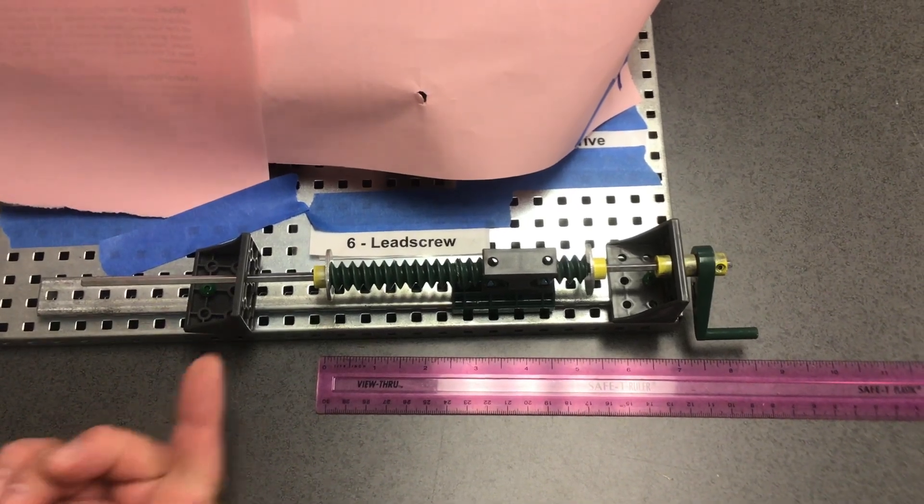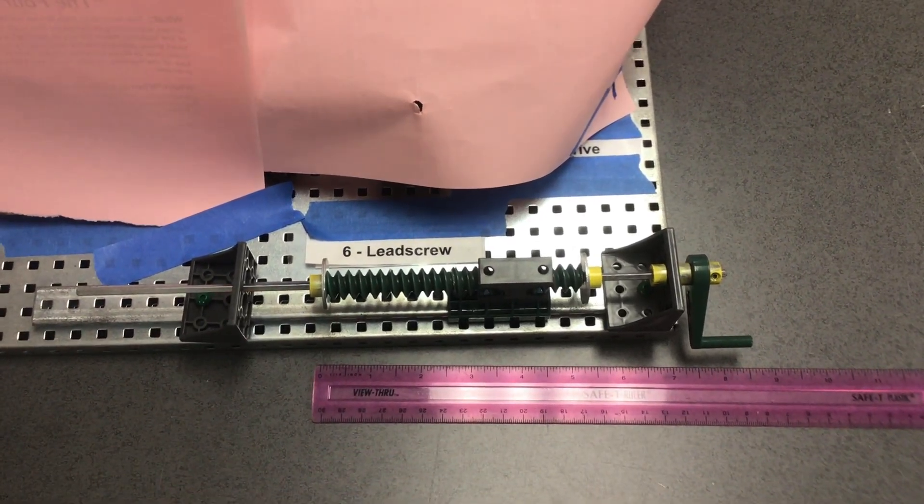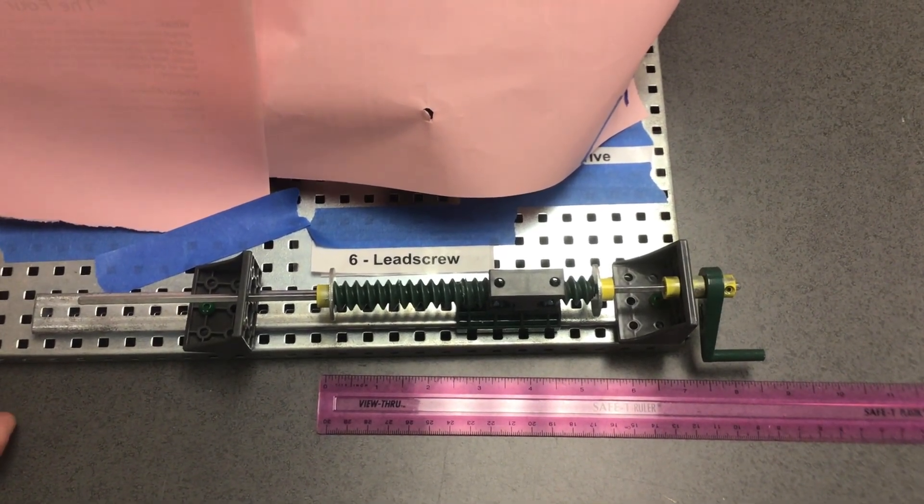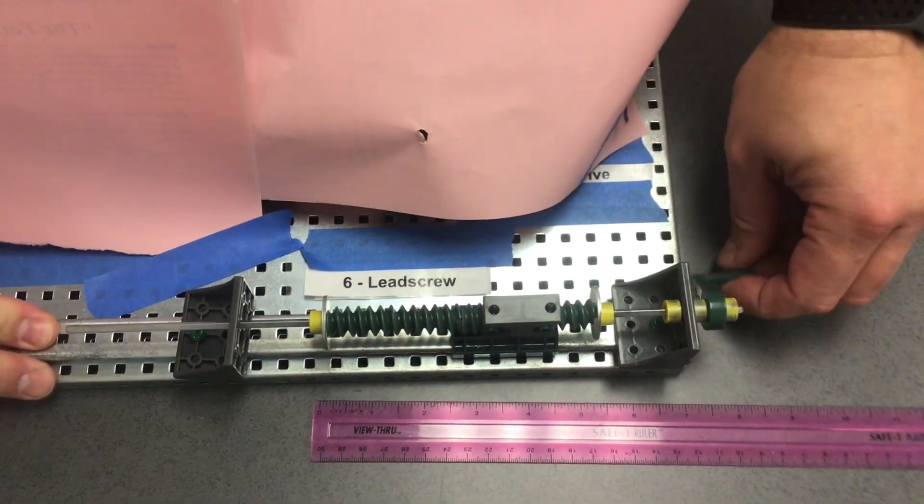This mechanism is the lead screw. The lead screw is very interesting because it uses a couple different types of movement. Let's just take a moment and take a look at what the lead screw does.